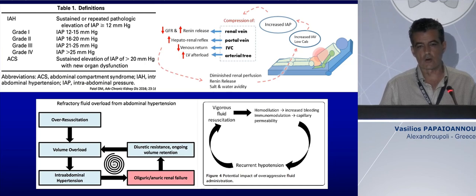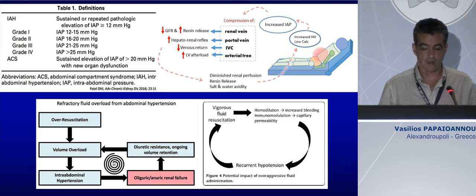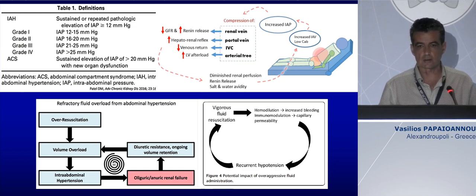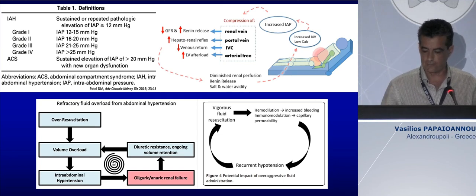Vigorous fluid administration is a catastrophe. Many studies have shown that over-resuscitation can induce intra-abdominal hypertension. We know that intra-abdominal hypertension can compress the renal vein and induce low GFR, causing oliguric renal failure despite vigorous fluid administration. It can also compress the portal vein and IVC, inducing reduced venous return, reduced cardiac output, reduced arterial pressure, more need for fluid, capillary leak — creating a vicious cycle that aggravates intra-abdominal hypertension.